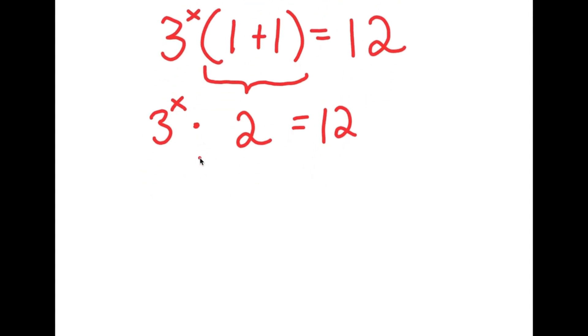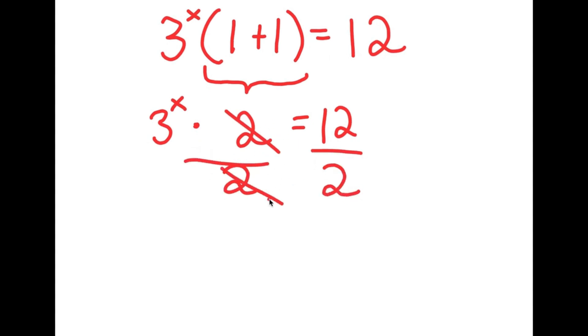From here, I'm going to divide both sides by 2. So when these two cancel out, I get 3 to the power of x is equal to 6.